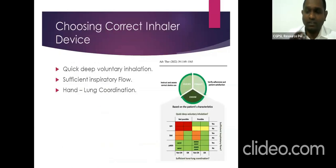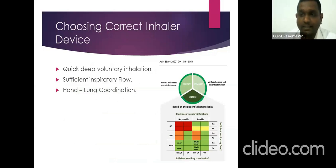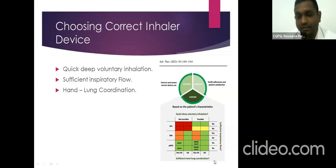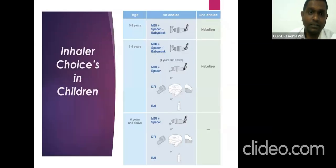Choosing the correct inhaler depends on the patient's inhalation capacity and respiratory flow, as published in a recent clinical trial. The choice should be based on patient characteristics. Patients should have quick and deep voluntary inhalation, sufficient inspiratory flow, and hand-lung coordination. For DPIs: if they have quick quality inhalation and correct inspiratory flow, it is possible. For PMDI, using a spacer is always recommended in green — it's a better treatment option. Mild cases with good inspiratory flow can always go with the dry powder inhaler.